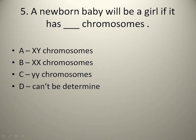If a child has XY chromosomes, the child will be a boy. On the other hand, if the child has XX chromosomes, the child will be a girl.